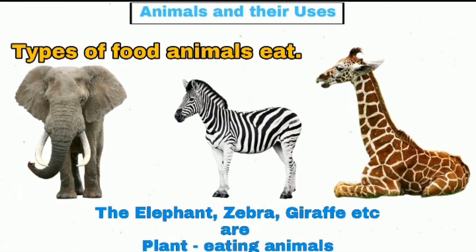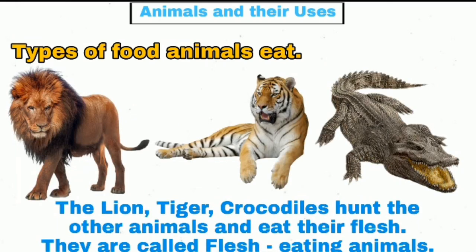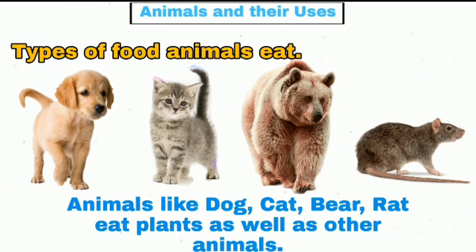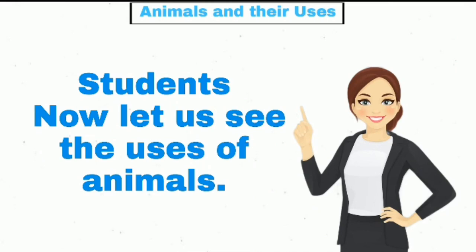The elephant, zebra, and giraffe are plant-eating animals. The lion, tiger, and crocodiles hunt other animals and eat their flesh — they are called flesh-eating animals. Animals like dog, cat, bear, and rat eat plants as well as other animals.